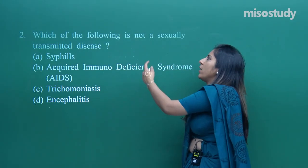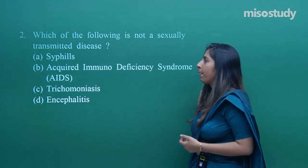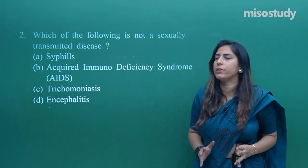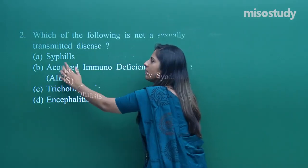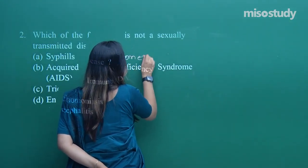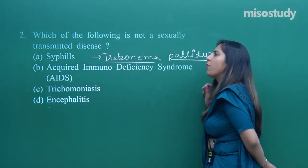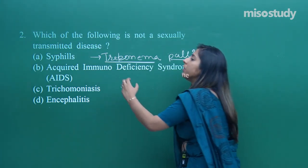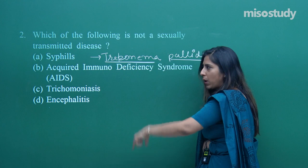Question number two: which of the following is NOT a sexually transmitted disease? Sexually transmitted diseases spread from one body to another through sexual contact or transfer of body fluids. Option A is syphilis — syphilis is a sexually transmitted disease. Its causative agent is Treponema pallidum, which you need to remember.